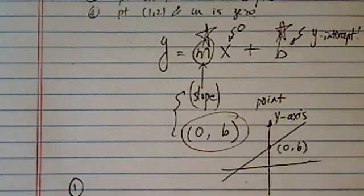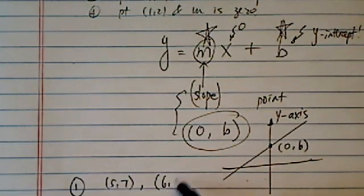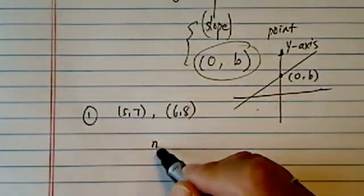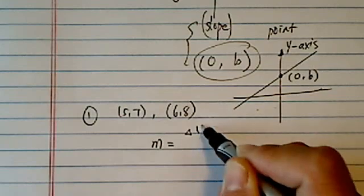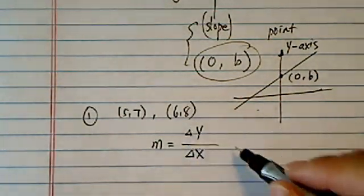The first question, they gave you two points: 5 and 7, 6 and 8. In order to calculate the slope between the two, we have change in y, change in x. This little triangle means change.